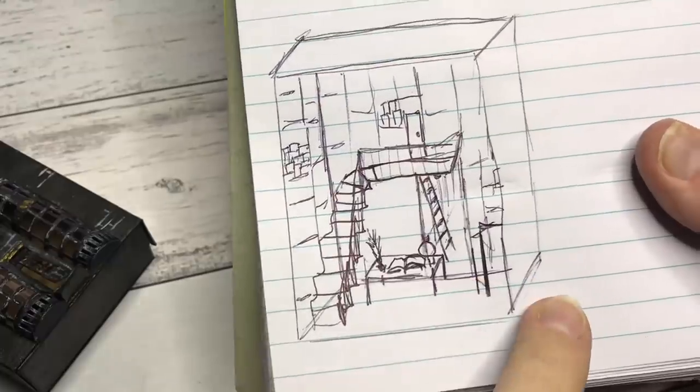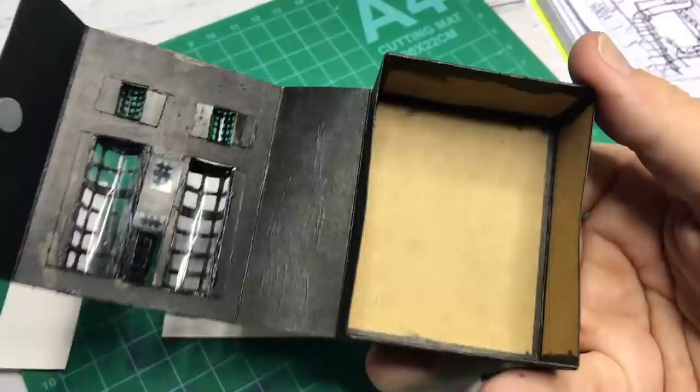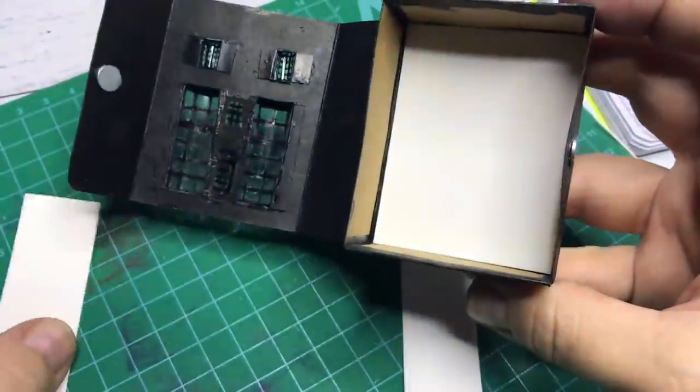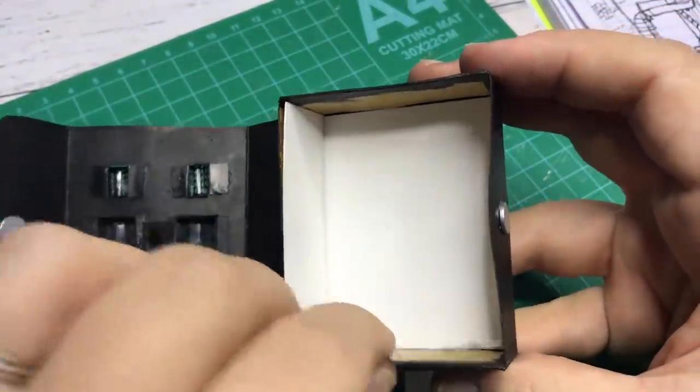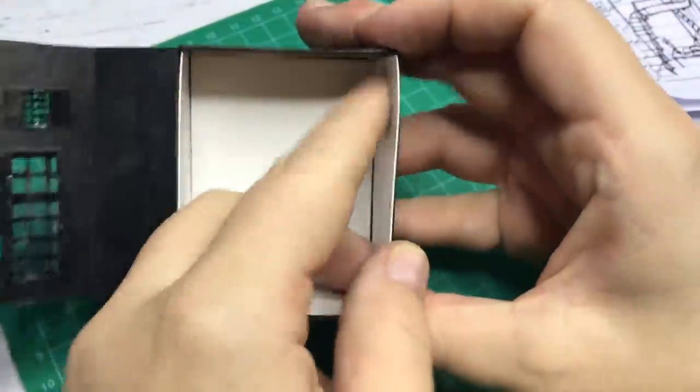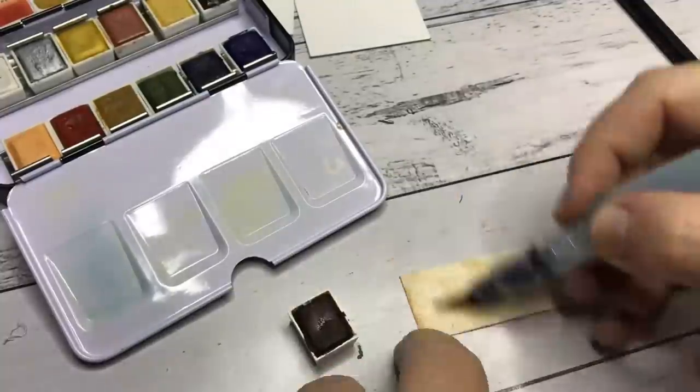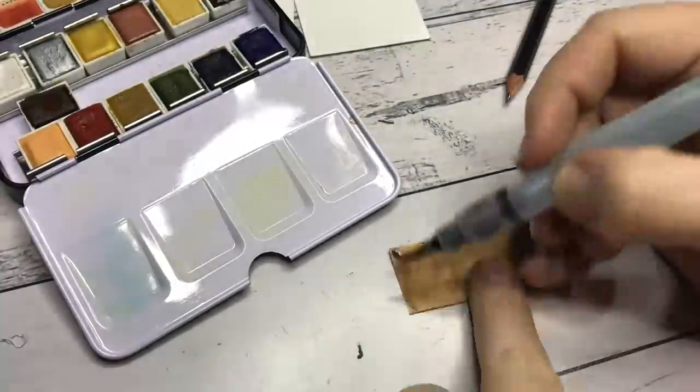Now for the interior of the shop. I took inspiration from the movies and the books and this will be my own interpretation of the shop. I cut watercolor paper to size to see how it fits inside the box. I start by painting the floor of the shop and make it look like wooden floorboards. I use watercolors for this.